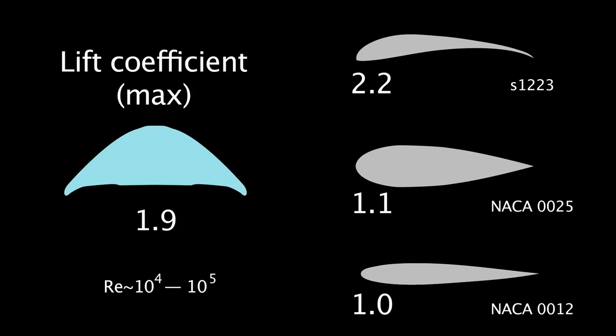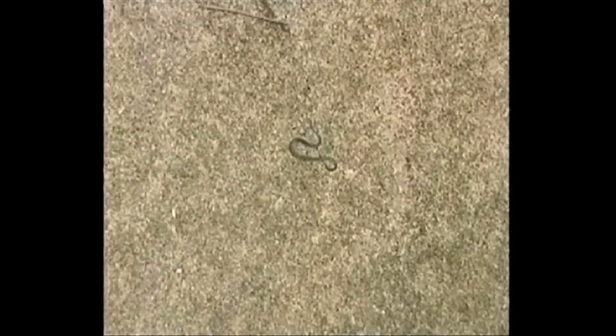Although this doesn't fully explain how the snake glides, we now understand that its body shape helps to keep the snake aloft.